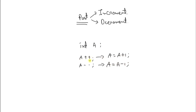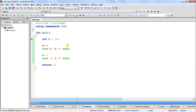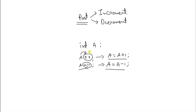We know that if it is a++, the expansion of this is a = a + 1. And if it is a--, this is the expansion for that. Why is it 'post'? Because this ++ is coming after 'a' — that is why it is post. And the same for -- also. So here, this is post-increment and this is post-decrement, which is a = a + 1 and a = a - 1 respectively.